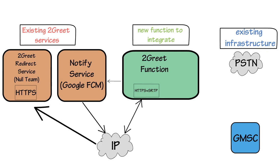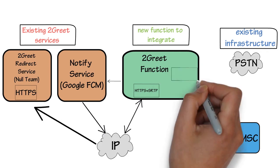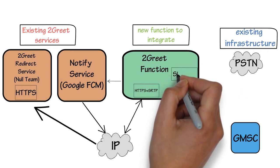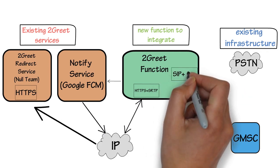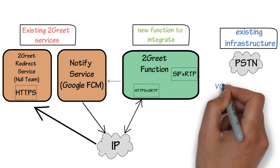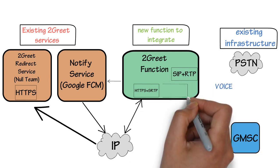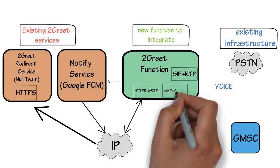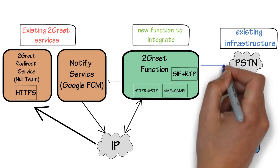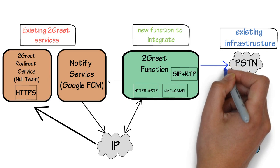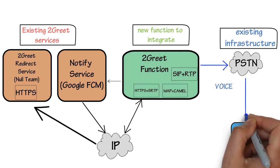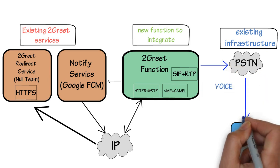On the mobile network side, there are two main connections: SIP and RTP for voice calls, and SIGTRAN for MAP and CAMEL for signaling. The voice calls are delivered and received using the SIP and RTP protocols.